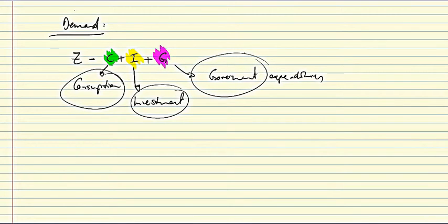Households, firms, and the government. Now, you're familiar with the consumption function. I'll write it down here. C is equal to c0 plus c1 y minus t, or yd. So we know that we can replace this C in here with this consumption function.